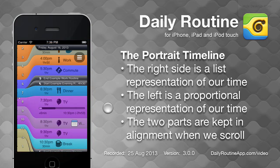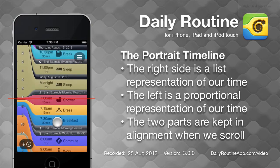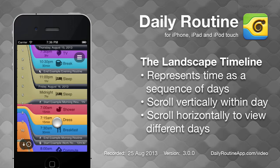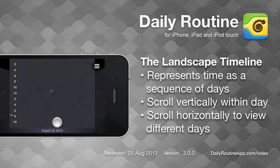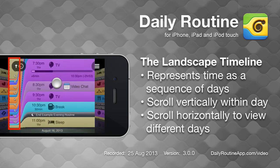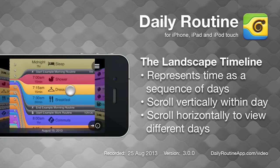When we scroll the timeline, these two representations are automatically kept aligned. If we rotate to landscape, time is represented as a sequence of days. When we scroll within a day, the left side represents the whole day and does not scroll. Scroll horizontally to navigate between these days.